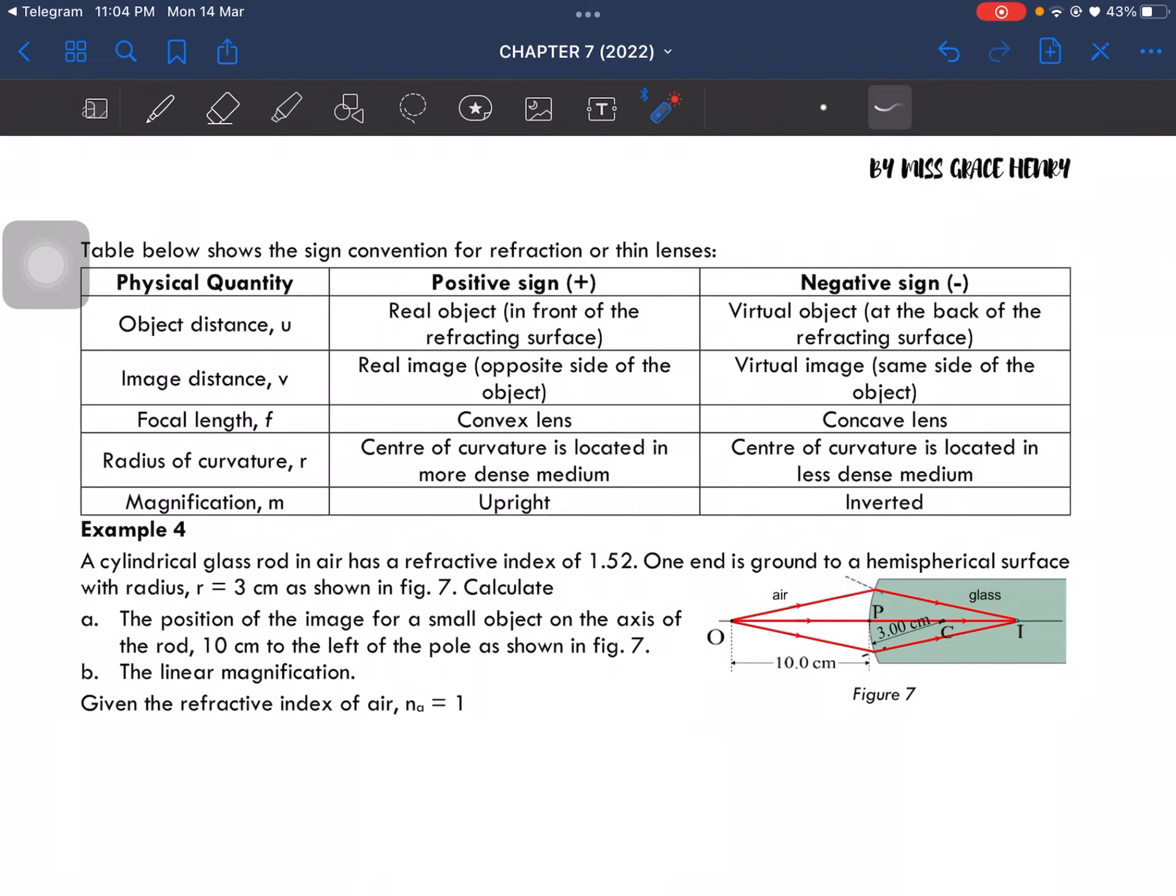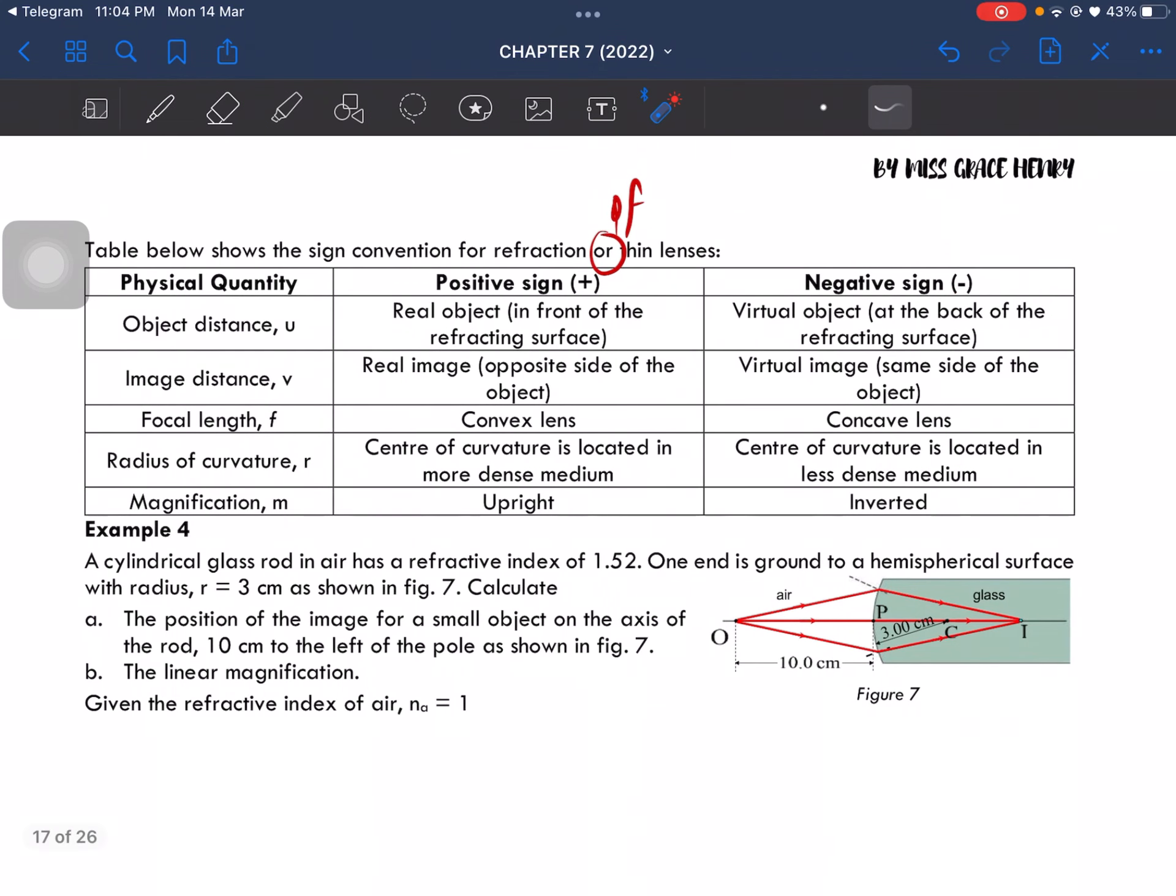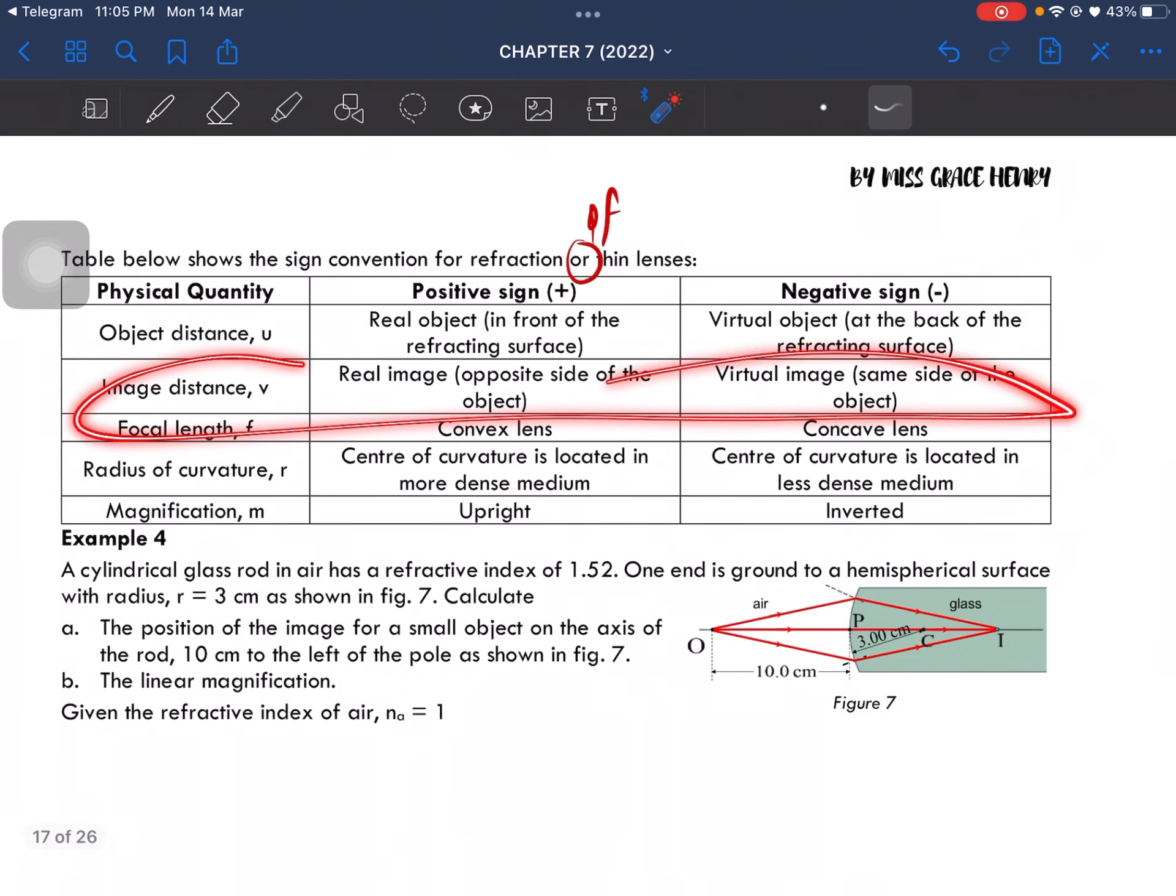Now, this table shows us the sign convention for refraction of thin lenses. The object distance will be positive if it is in front of the refracting surface, which means it is a real object. Virtual object is negative. The image distance is real if it is at the opposite side of the object, which is positive. It is virtual if it is at the same side of the object.